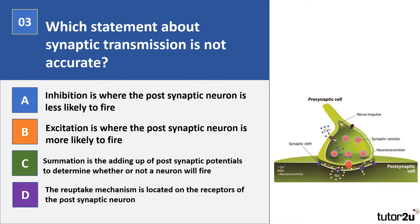Question three. Which statement about synaptic transmission is not accurate? A: inhibition is where the post-synaptic neuron is less likely to fire. B: excitation is where the post-synaptic neuron is more likely to fire. C: summation is the adding up of post-synaptic potentials to discern whether or not a neuron will fire. D: the re-uptake mechanism is located on the receptors of the post-synaptic neuron. Pause the video.